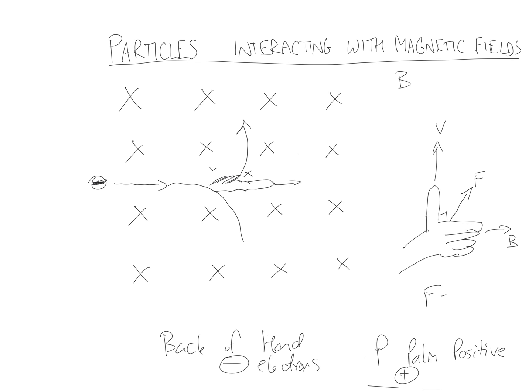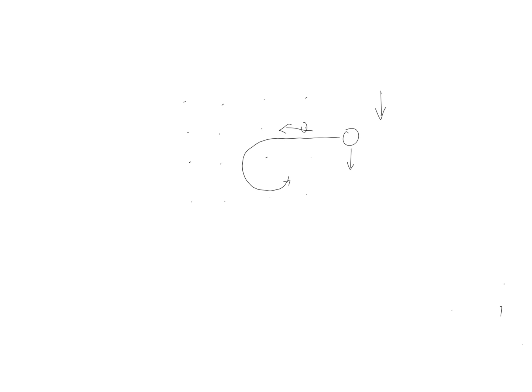Starting a new example: here we have a field with arrowheads indicating the field is coming out of the page towards us — represented by dots. A particle enters this field and moves around in circular motion in a certain direction. The force has acted in the direction of the palm if positive. The particle is traveling into this field and moves around in a circular direction, meaning the force has acted a certain way. The back of the hand would indicate a negative particle. So we apply the right-hand rule again.